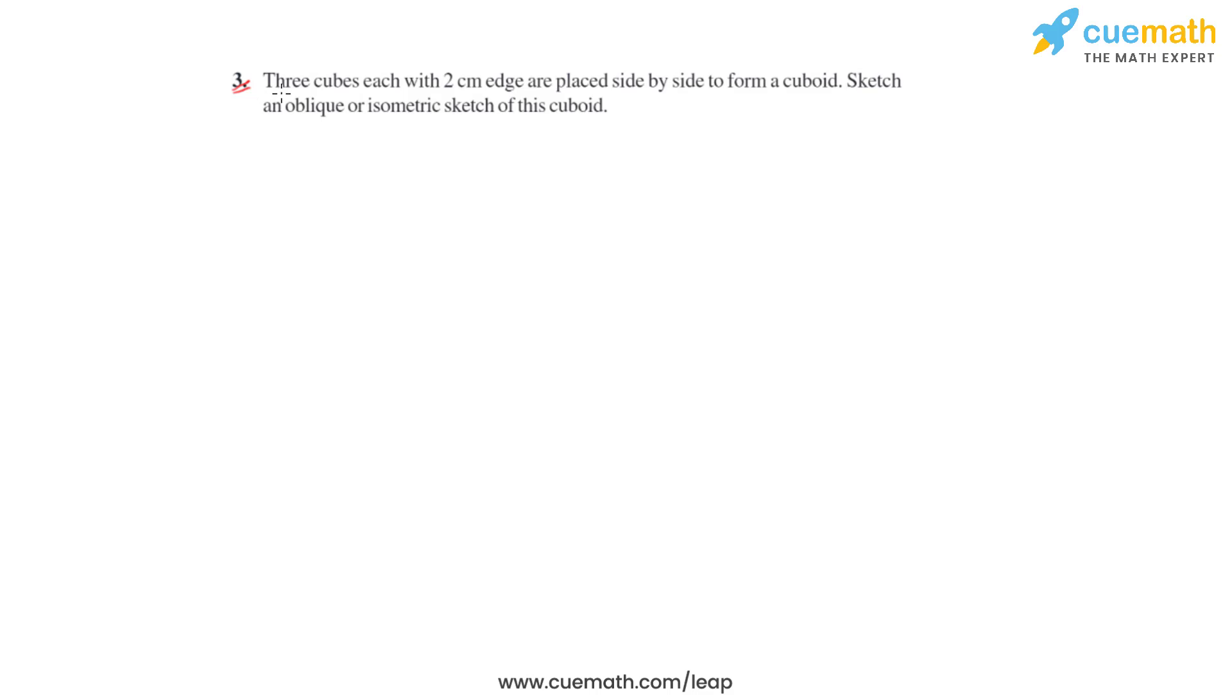In this third question of the second exercise, we have been given three cubes, each with a two centimeter edge, placed side by side to form a cuboid. We will sketch an oblique or isometric sketch of this cuboid.